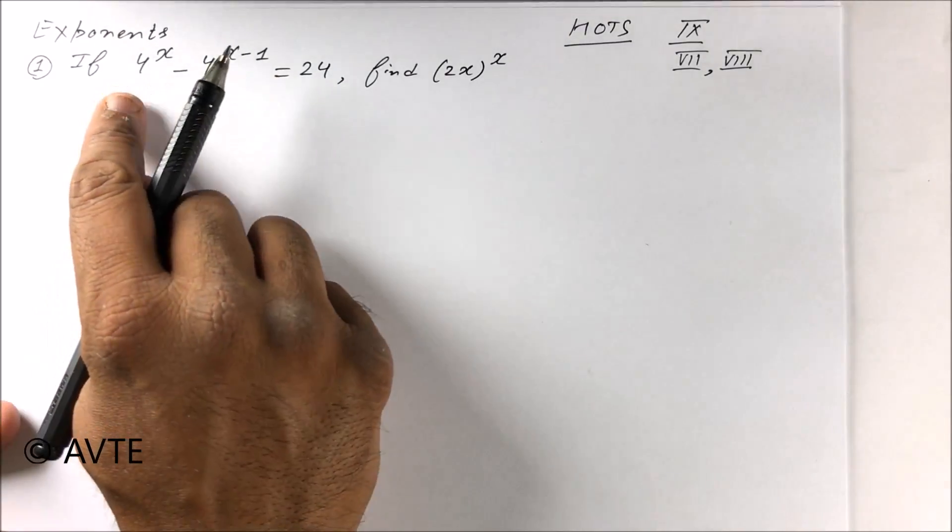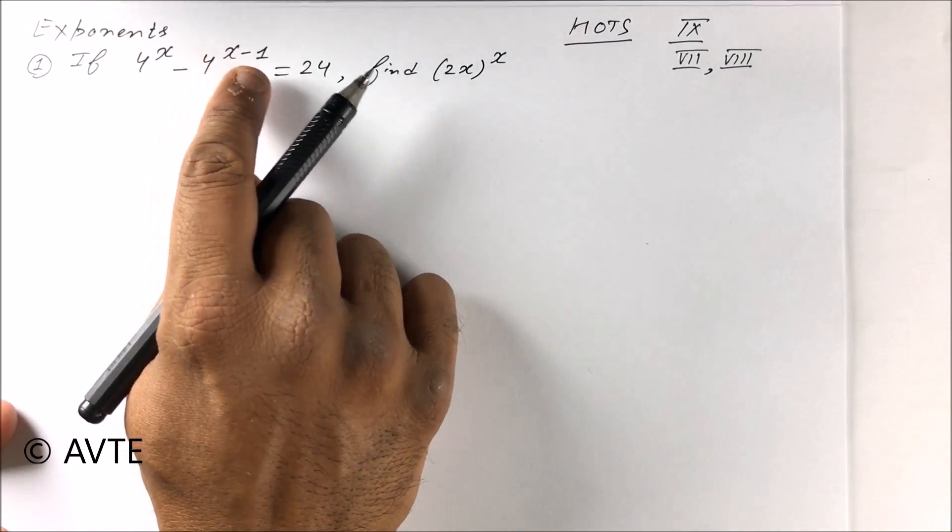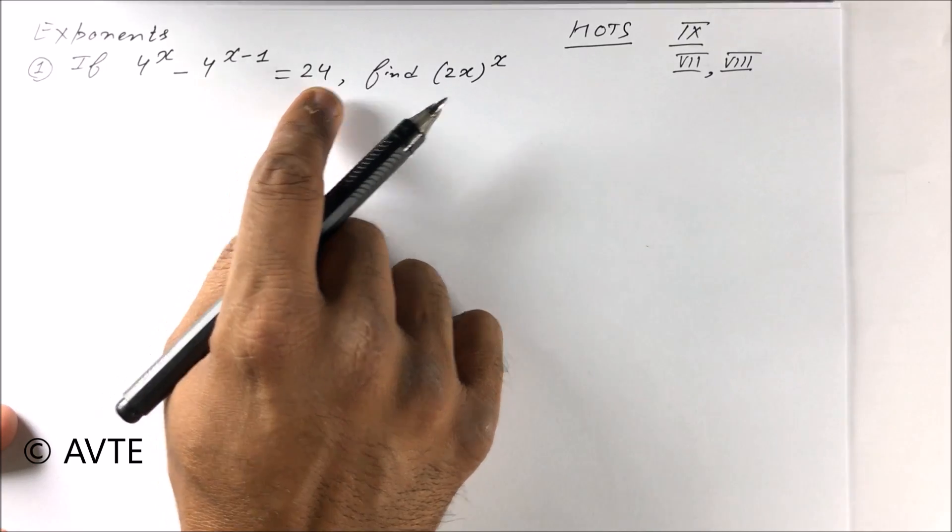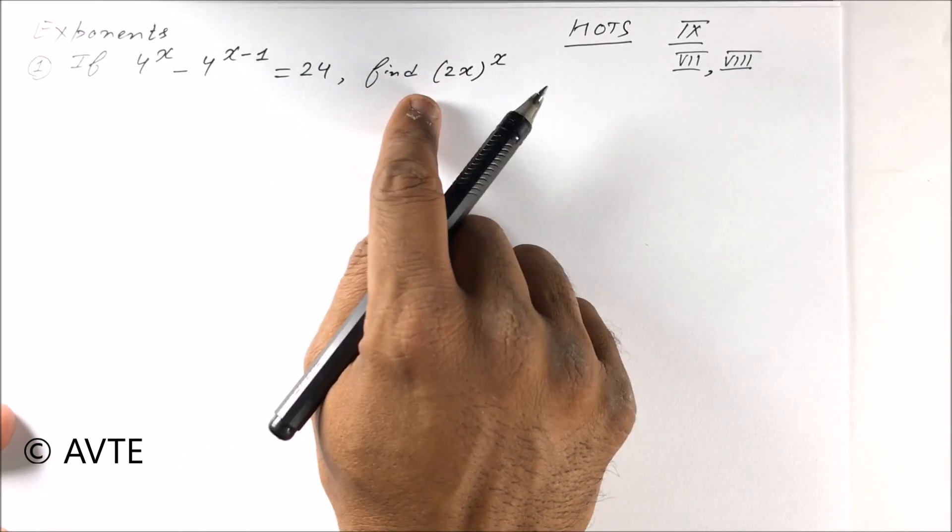So here is a question: 4 raised to power x minus 4 raised to power x minus 1 is equal to 24. Find (2x) raised to power x.